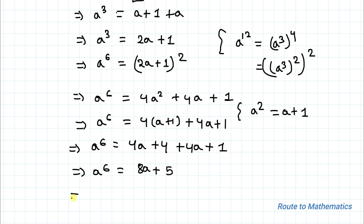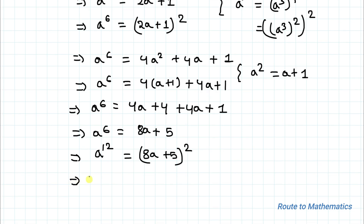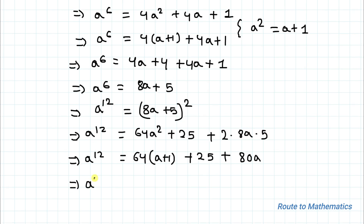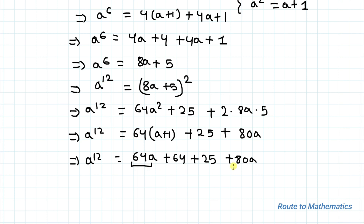Now I'll again square both sides. So a to the power 6 squared becomes a to the power 12, and we have (8a plus 5) whole squared. This gives 64a² plus 80a plus 25. Replacing a² with a plus 1 from Equation 1, we get 64(a plus 1) plus 80a plus 25. Adding 64a and 80a gives us a to the power 12 equals to 144a plus 89.